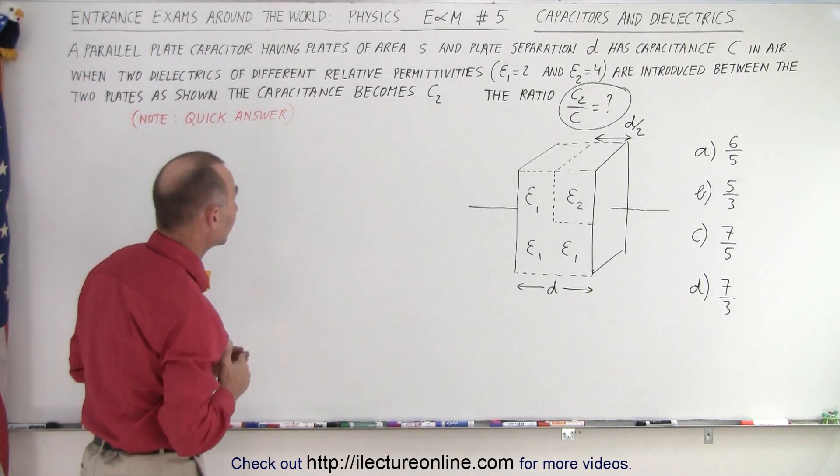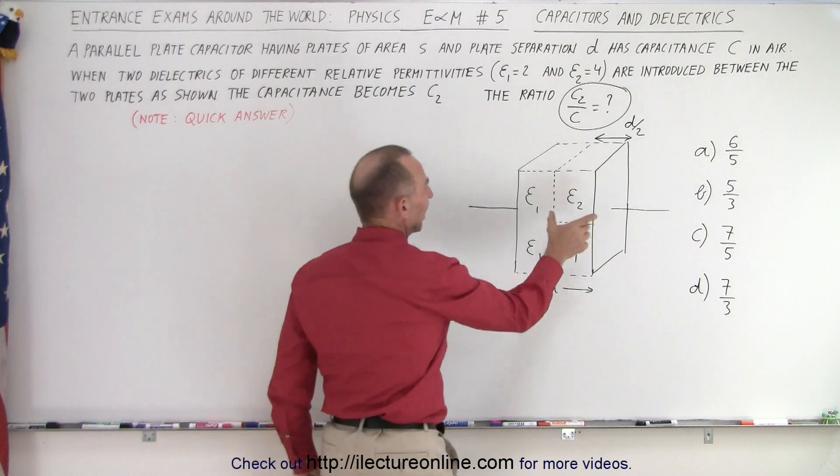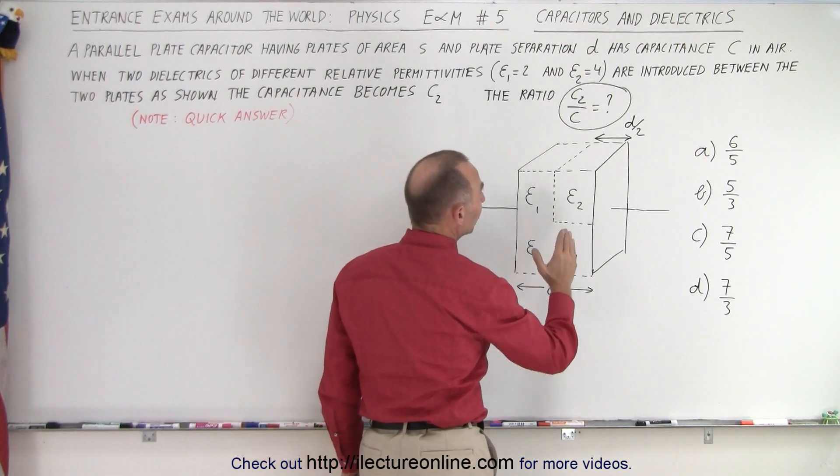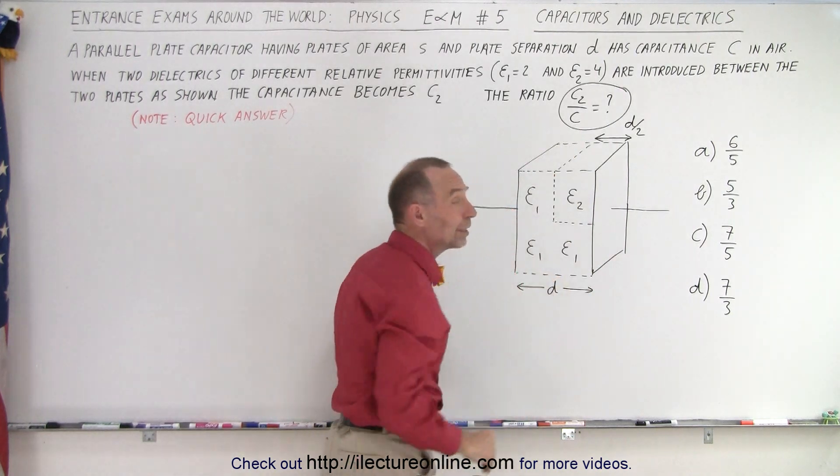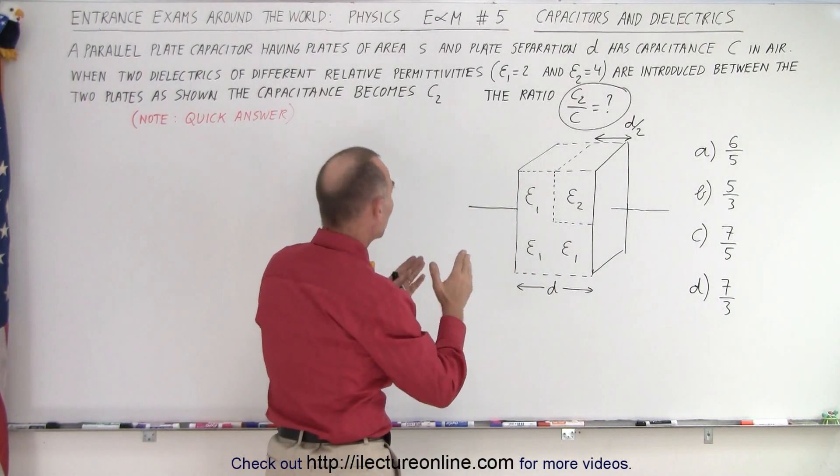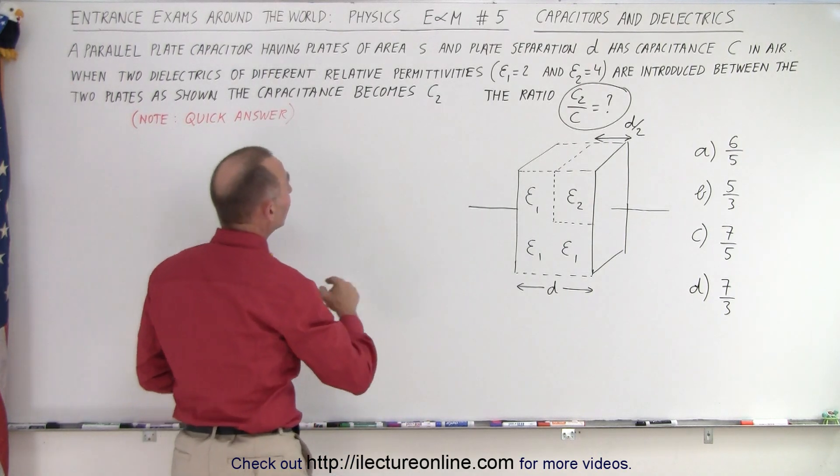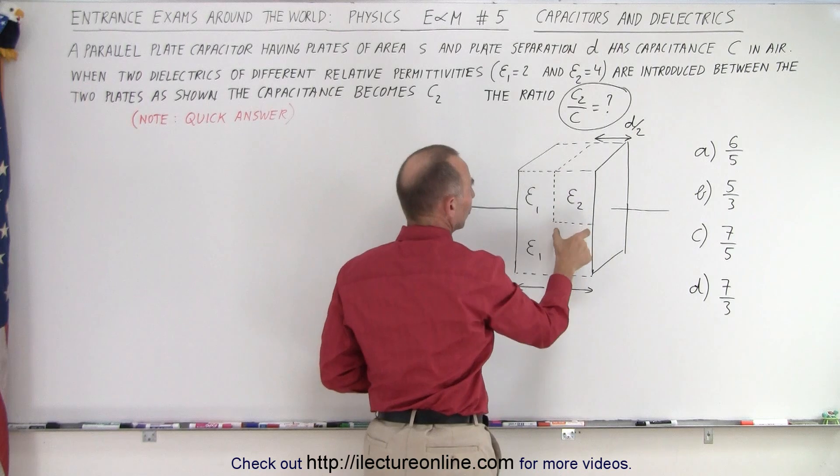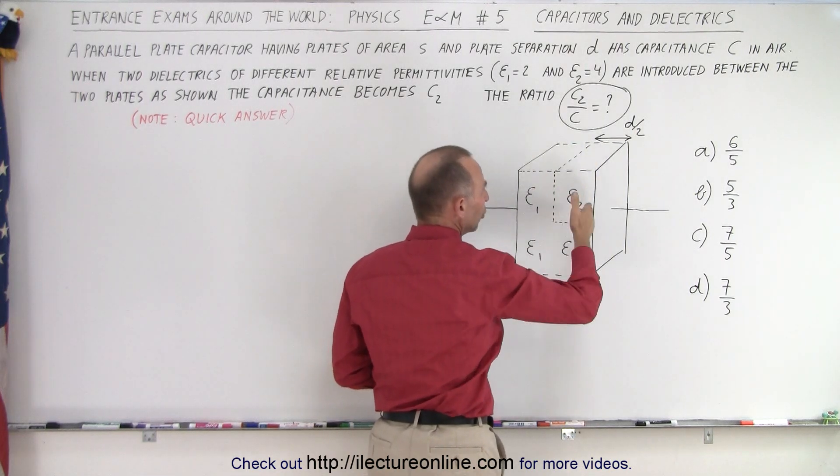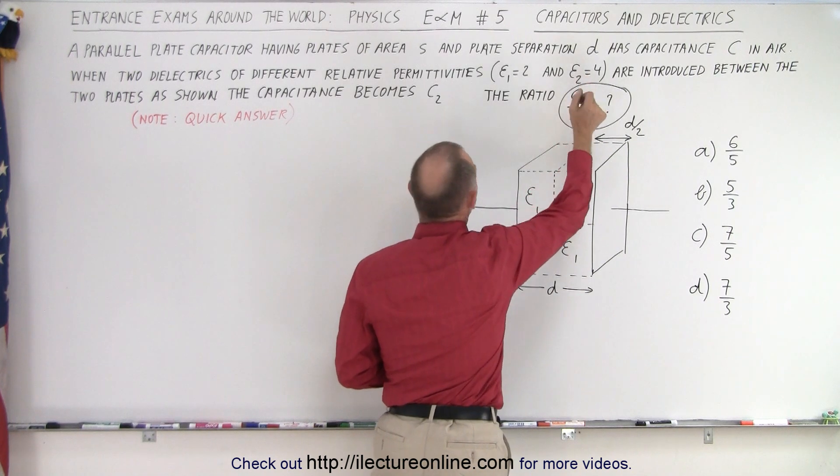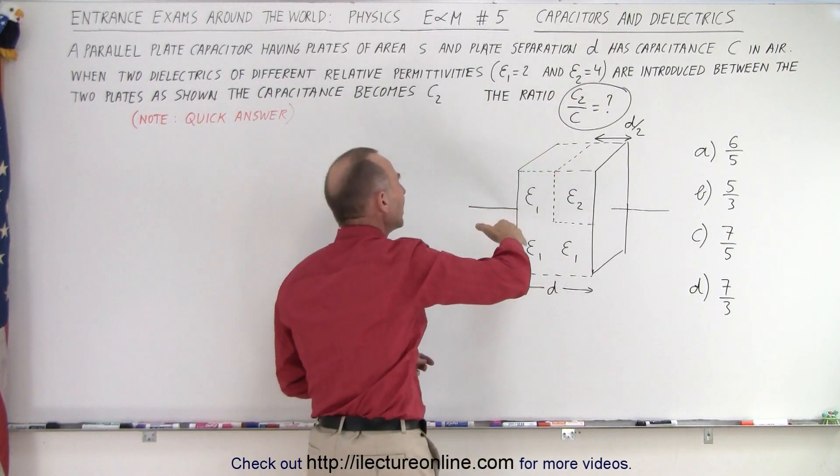We're dealing with a parallel plate capacitor that has area S and separation distance d. It has capacitance equal to C if there's air between the plates. Then there's dielectrics placed between them with relative permittivities e1 is 2 and e2 is 4. There's a small segment, one quarter of the dielectric up here, that has a relative permittivity equal to 4.